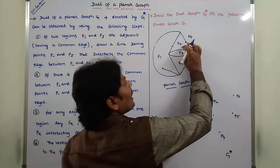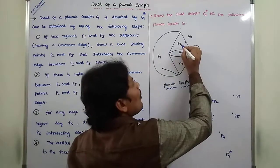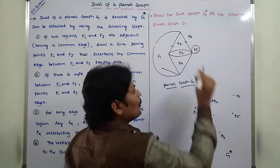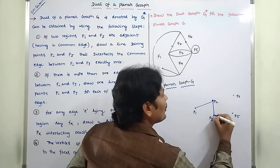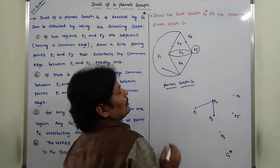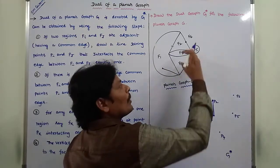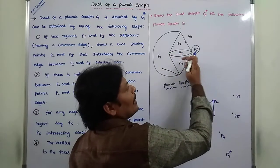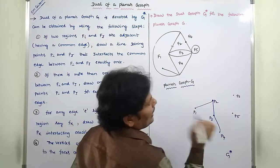F2 and F3 are adjacent regions, connected by a common edge. F2 corresponding point is P2, F3 corresponding point is P3. We have to draw the line between P2 and P3 that intersects the common edge between F2 and F3 regions. F3 and F4 are adjacent regions, separated by this common edge. We have to draw the line between the corresponding points P3 and P4 that intersects the common edge between F3 and F4 regions.